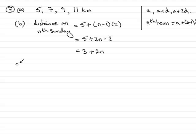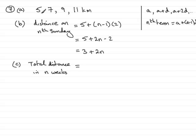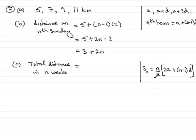In part c we're asked to show that the total distance she runs on Sundays in n weeks of training is n times n plus four. We need to look at the total distance in n weeks. What we need here is the sum of an arithmetic progression, written as S subscript n. The formula is n over two, multiplied by twice the first term 2a, plus n minus one times the common difference d.